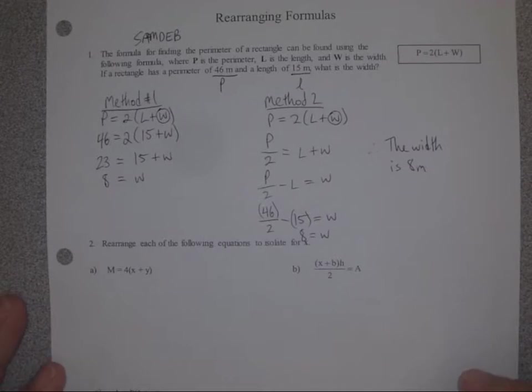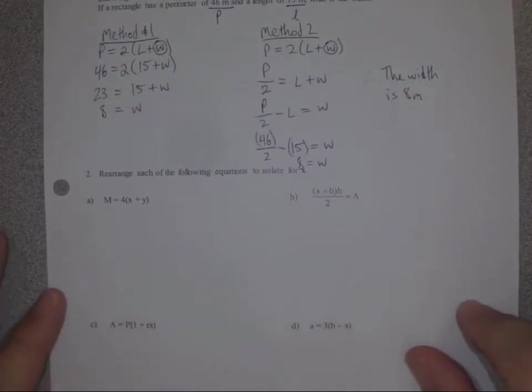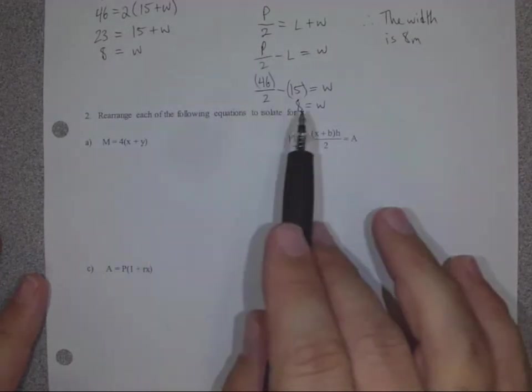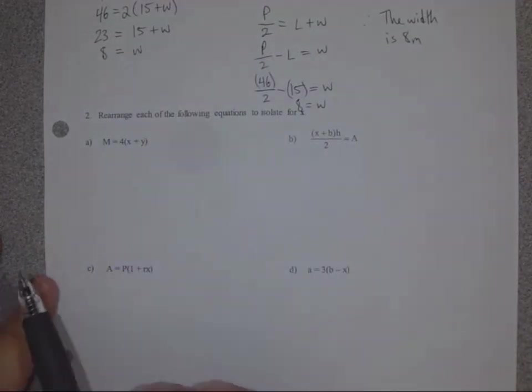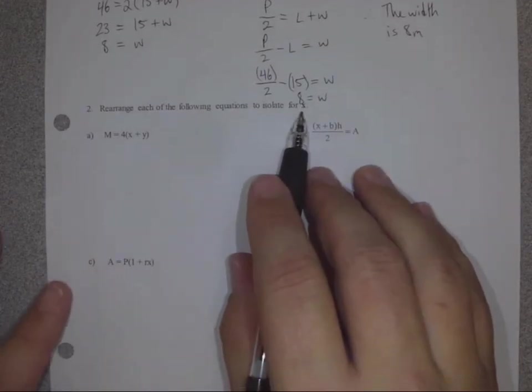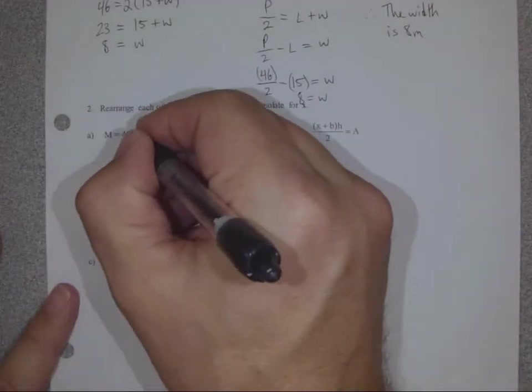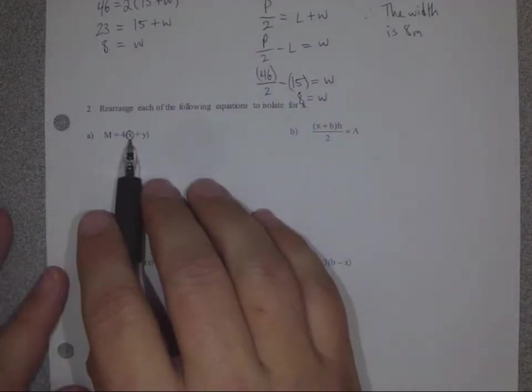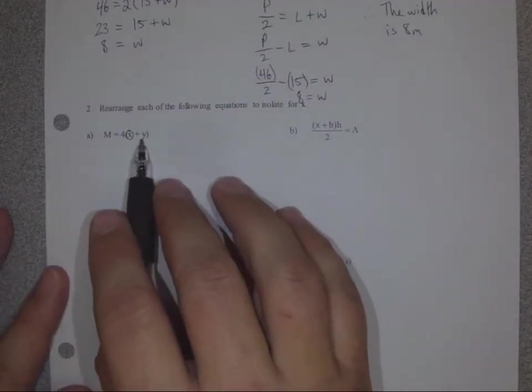Let's try a few of these now in number 2. So in number 2, we don't have a choice. We can't solve when we have nothing to substitute in. So we can't use method number 1. We have to use method number 2. We're trying to isolate for x. So I'd like you to circle the variable we're trying to isolate and move things away from that x.